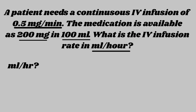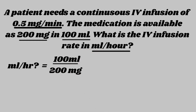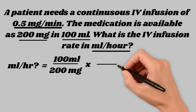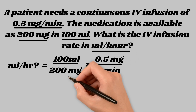We're searching for mLs per hour, so we'll put that first with a question mark and start our equation. We want mLs on top first, and then we can get hours later. We have 100 mLs over 200 milligrams, so we'll write that out first. Then we need to get rid of milligrams. The question has 0.5 milligrams per minute, and since milligrams are on the bottom, we'll write milligrams on top next to it so they cancel each other out. We'll put 0.5 milligrams over 1 minute — canceling out milligrams, so we're left with mLs per minute.